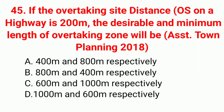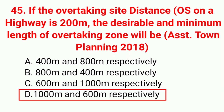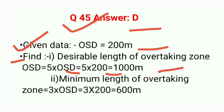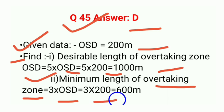Question 45: If the overtaking sight distance (OSD) on a highway is 200 m, the desirable and minimum length of overtaking zone will be — correct answer option D: 1000 m and 600 m respectively. Given OSD = 200 m: desirable length = 5 × OSD = 5 × 200 = 1000 m; minimum length = 3 × OSD = 3 × 200 = 600 m.